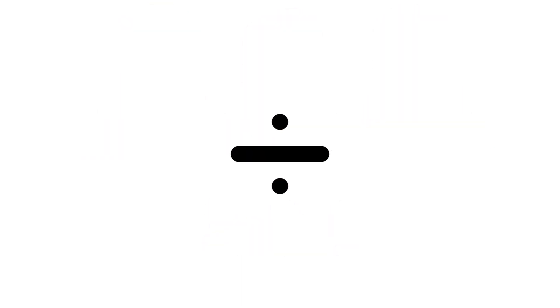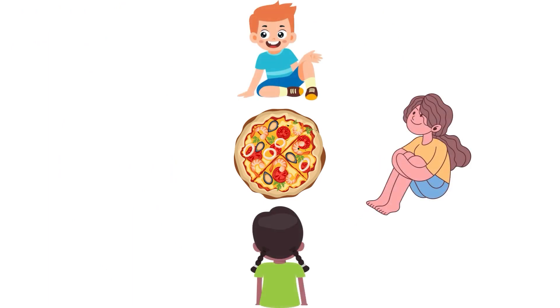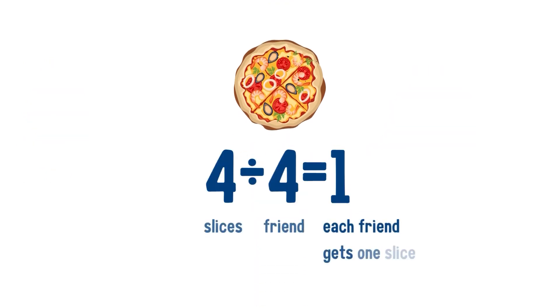This is the division symbol. We use this symbol when we want to divide one number by another. For example, imagine I have a pizza. I have three friends, and I want to share the pizza with them and myself. So I divide the pizza into four slices, and each of us gets one slice.